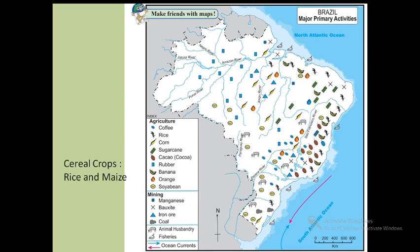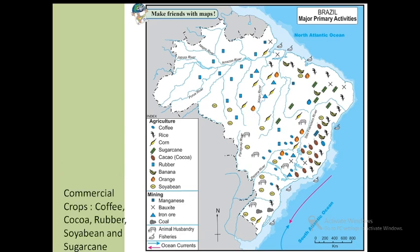Cereal crops like rice and maize are the main crops. Rice is grown in the coastal part and maize is grown in the central part of Brazil. Apart from these main crops, we also find cash crops or commercial crops like coffee, cocoa, rubber, soya bean and sugar cane.